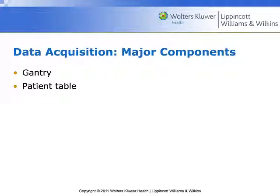The patient table is wired pretty directly to the gantry, so as the table moves, the gantry makes corresponding movements, and it can calculate all of that really, really closely.